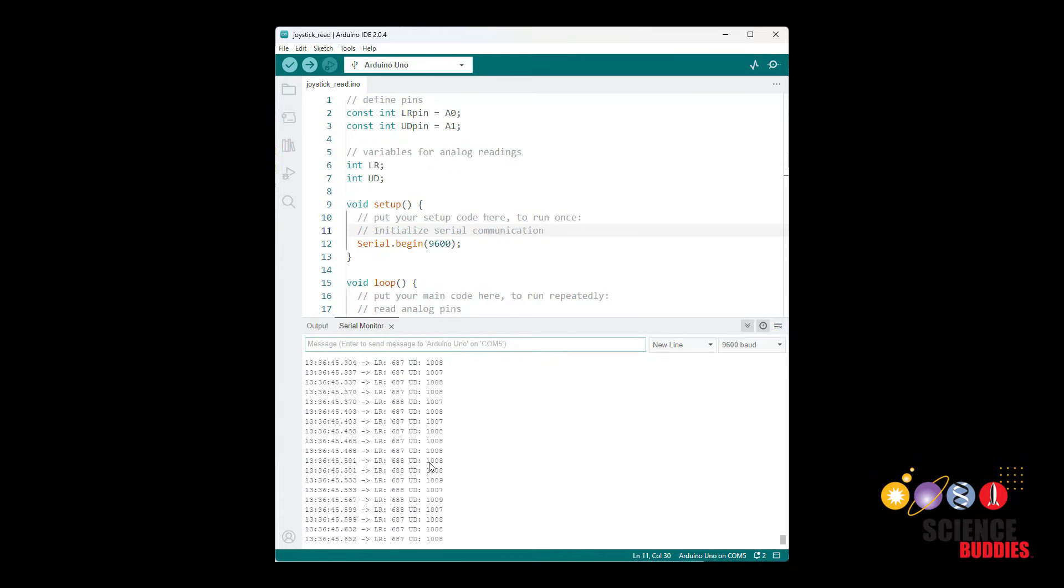Similarly if I push it all the way up it's getting up around 1010, 1009 but not getting all the way to 1023 and we'll see the same thing if I move it left and right. I'm not getting all the way down to 0 there or all the way up to 1023 here but I have a pretty good range and you can see if I move the joystick around in a circle both of these numbers are going to change at the same time.